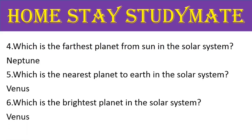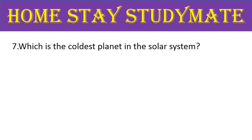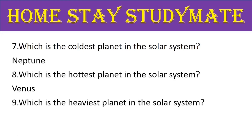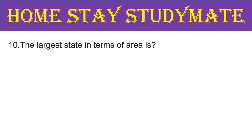Question number 6: which is the brightest planet in the solar system? The right answer is Venus. Next, question number 7: which is the coldest planet in the solar system? The right answer is Neptune. Next, question number 8: which is the hottest planet in the solar system? The right answer is Venus.